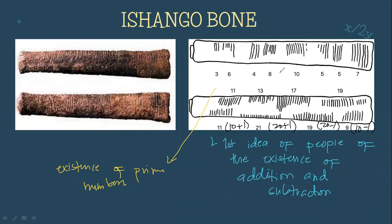Looking at another bone, researchers and archaeologists suggest that this is proof of the idea of duplication — which is now synonymous with multiplication. We have 3 times 2 equals 6, 4 times 2 equals 8, and 5 times 2 equals 10.